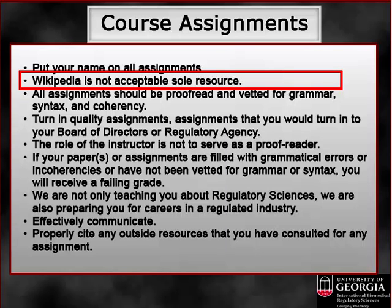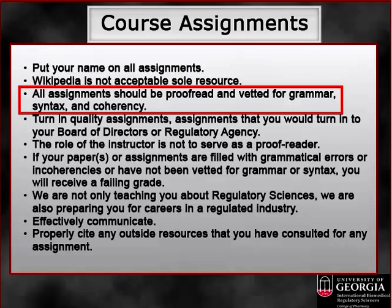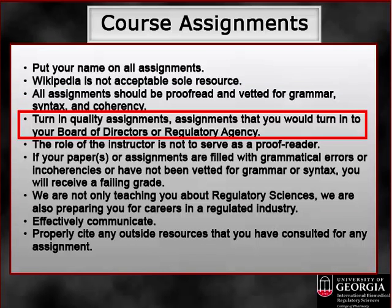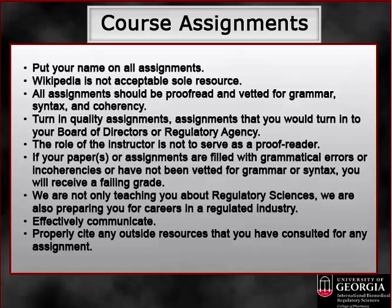Wikipedia is not an acceptable sole resource. If you use it, you need to cite it and make sure that you find other, more academically focused references. In addition, all assignments should be thoroughly proofread and vetted for grammar, syntax, and coherency. It is your responsibility as graduate students to turn in quality assignments — assignments that you would turn in to your board of directors or to a regulatory body. Remember that the role of the instructor is not to serve as a proofreader or editor, but to ensure your understanding of the materials. If your papers or assignments are filled with grammatical errors or incoherencies and have not been vetted for grammar or syntax, you are likely to receive a failing grade for that assignment.